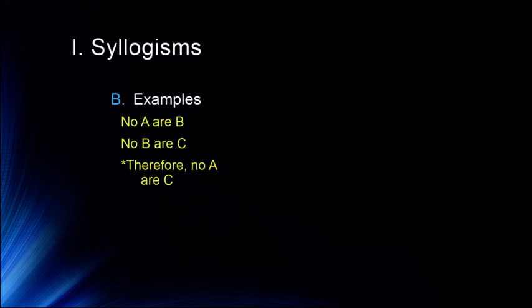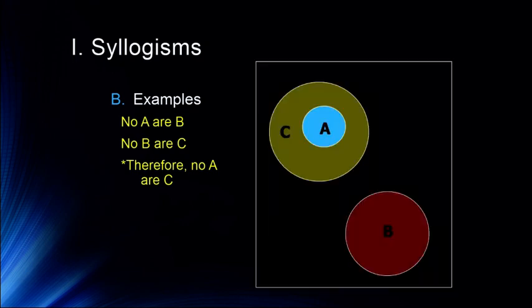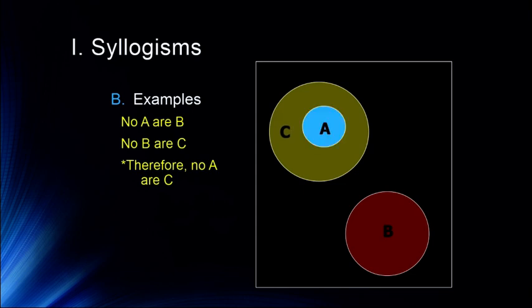Similarly, if no A's are part of category B, and no B's are part of category C, we cannot conclude that no A's are C's — because it's entirely possible that A and C overlap, or that they don't. Both of these situations are logically possible based on the premises presented in the syllogistic argument.